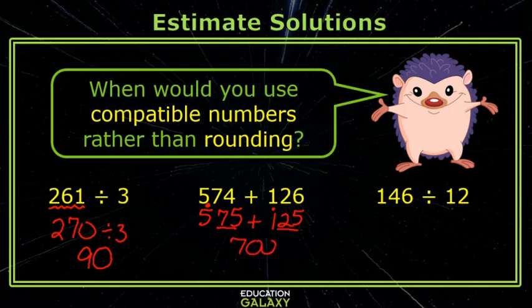And again, we're estimating. I also know that 12 times 12 is 144, so if I think of this as 144, then the estimated answer is 12.